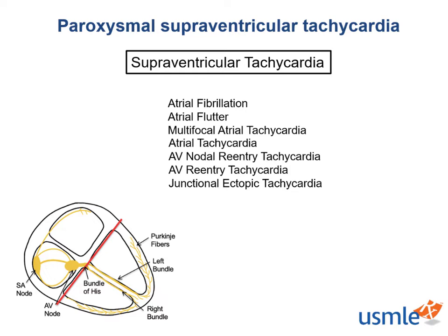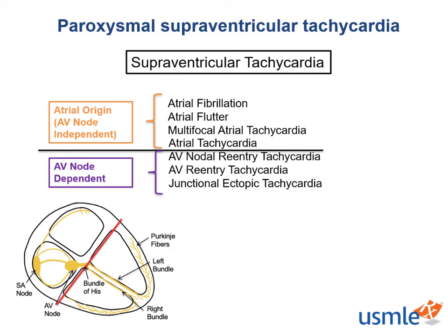In general, there are SVTs that originate in the atria, and SVTs that originate in or involve the AV node. Paroxysmal SVTs, or PSVTs, are a subtype of SVTs. To be considered a PSVT, the onset of the tachycardia has to be very abrupt, it often terminates abruptly as well, and the rhythm must be regular.